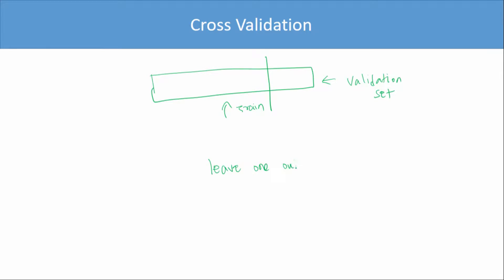What people typically do when you don't have too much training data is something called leave-one-out cross-validation. It's just leaving one point out for the validation test. You use m minus one points for your training and then test it on the last point. You create m such training sets, then average it and see what your accuracy is. That is how you pick the regularization parameter lambda.